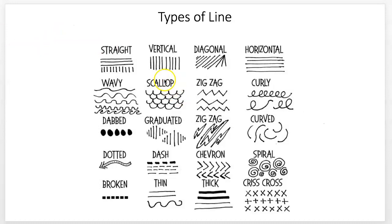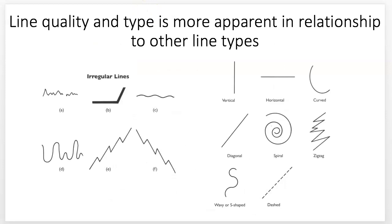There are types of lines with different qualities. Vertical, diagonal, horizontal — these are in relationship to the page. Then there's the quality of the line itself: straight, wavy, scallop, zigzag, curly, curve. So there's the orientation on the page and then there's the quality of the line.